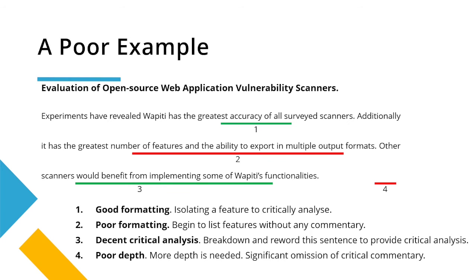There's no rubric for critical analysis, but as I said, it is expected in the latter stages of your studies. So we're just going to go straight into the examples, starting with a poor example concerning a web application scanning paper and particularly the discussion section of that paper. I want to discuss four aspects of it.